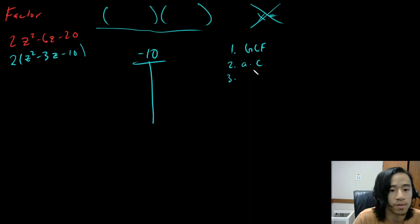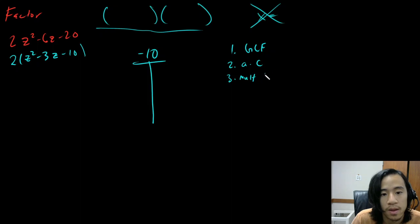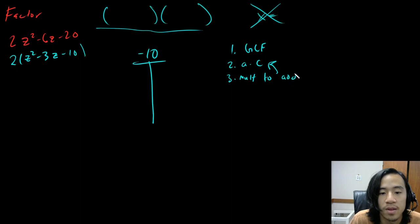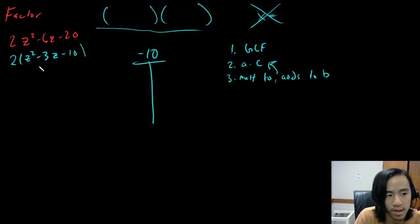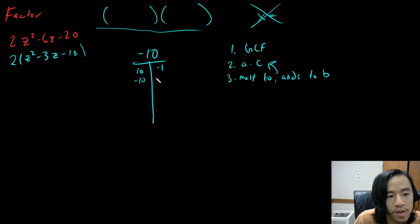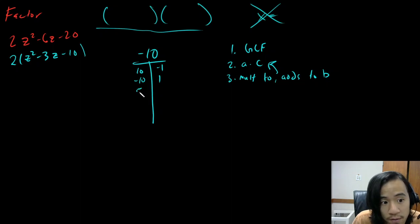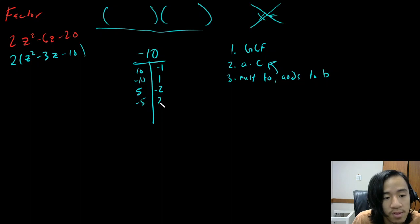Step three: you're going to find two numbers that multiply to a times C — in this case negative 10 — and add to B. So B in this case is negative three. Let's go down the list. First we have 10 and negative one — that doesn't work. Negative 10 and one — that's negative nine, doesn't work. Then five and negative two — that adds to positive three, so that doesn't work. And then negative five and two — that adds to negative three. So this works.